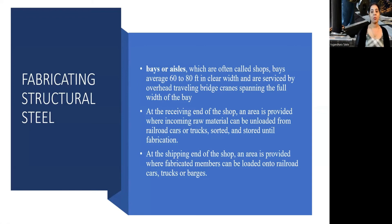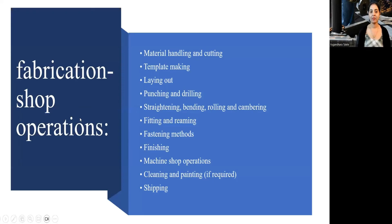At the receiving end of the shop, an area is provided where incoming raw material can be unloaded from railroad cars and sorted until fabrication. At the shipping end, an area is provided where fabricated members can be loaded onto railroad cars, trucks, or barges. Various fabrication shop operations include: material handling and cutting, template making, laying out, punching and drilling, straightening, bending, rolling and cambering, fitting and reaming, fastening methods, finishing, machine shop operations, cleaning and painting if required, and then shipping.